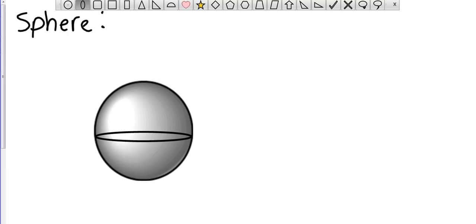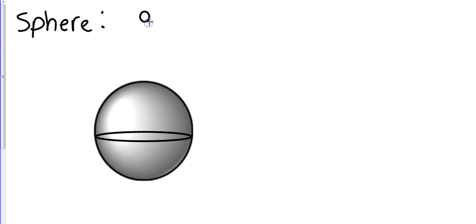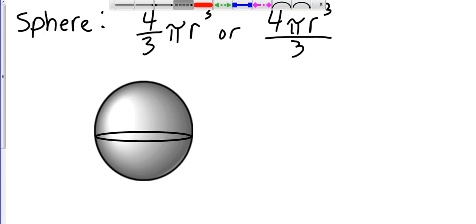Okay, and for a sphere, the volume is 4/3 - excuse me, 4/3 πr³, my mistake, overlapping too many things. All right, or how I'm going to do it is 4/3 πr³ divided by 3. Okay, and so let's say I have a radius of 8 inches.